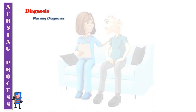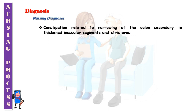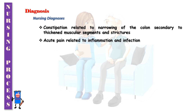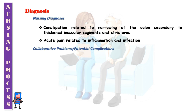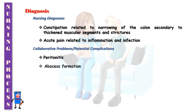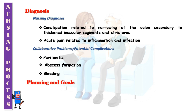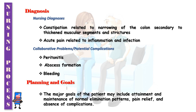Nursing diagnoses: Constipation related to narrowing of the colon secondary to thickened muscular segments and strictures. Acute pain related to inflammation and infection. Collaborative problems and potential complications include peritonitis, abscess formation, and bleeding. The major goals of the patient may include attainment and maintenance of normal elimination patterns, pain relief, and absence of complications.